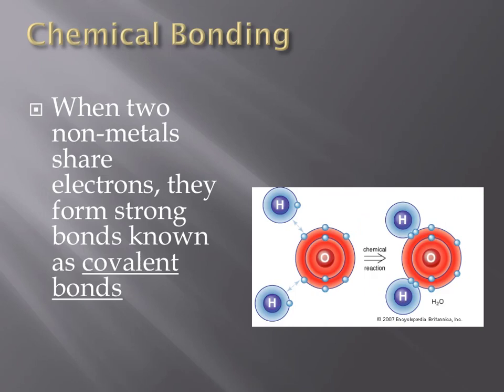There are two primary ways that atoms can become more stable through chemical bonding. The first way is by sharing electrons. Two non-metals, or elements that are found on the right side of the periodic table, can share electrons when they form covalent bonds. The picture to the right shows two hydrogen atoms with one electron in their outermost level, and one oxygen atom with six electrons in its outermost level. When these three non-metals share electrons, they fill up all of their outermost level of electrons, and they form very strong covalent bonds. The resulting product is water.